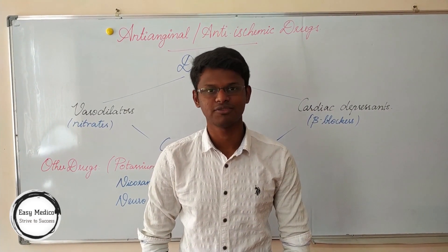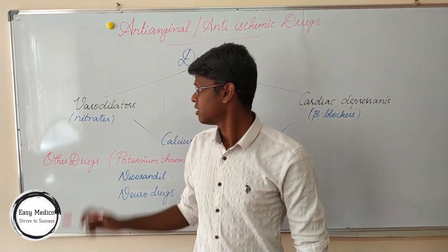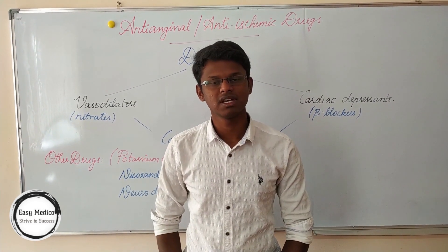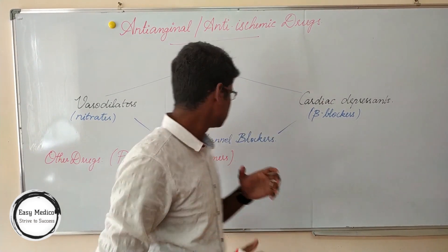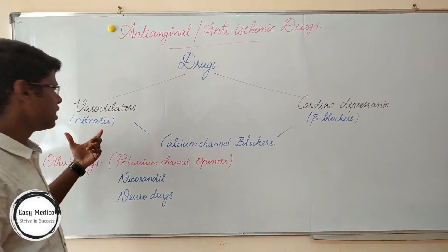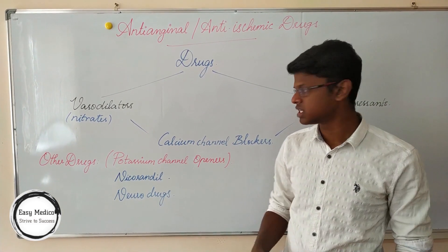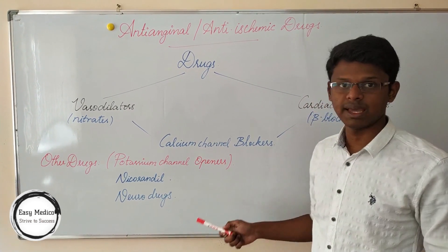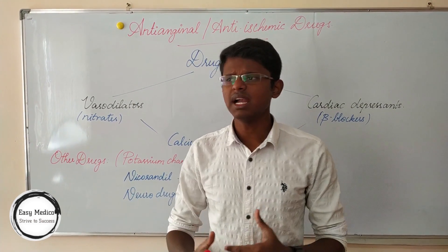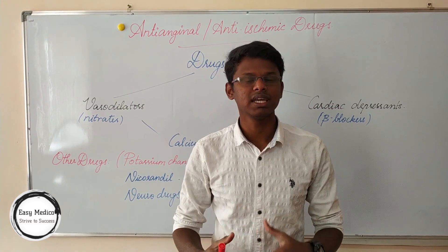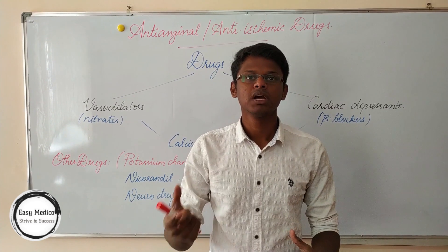The drugs used to treat angina pectoris are classified into three main categories. First, vasodilators — examples are nitrates. Next, cardiac depressants — examples are beta blockers. Next, calcium channel blockers, where the effects of both nitrates and beta blockers come into action. There are also other drugs which are potassium channel openers — example, nicorandil. When anti-anginal drugs do not address any vascular pathology, they are often aided with aspirin or ACE inhibitors.